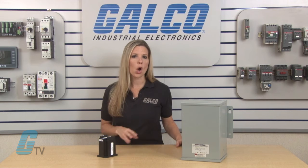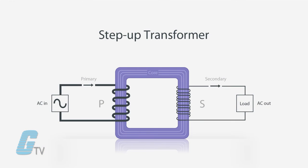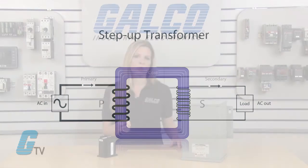When an input voltage is applied to the primary winding, alternating current starts to flow in the primary winding. As the current flows, a changing magnetic field is set up in the transformer core. As this magnetic field cuts across the secondary winding, alternating voltage is produced. The ratio between the number of actual turns of wire in each coil is the key in determining the type of transformer and what the output voltage will be.